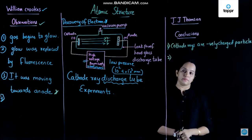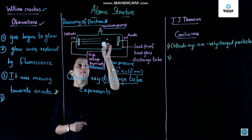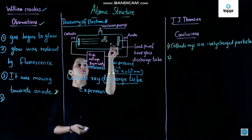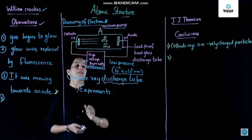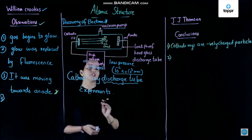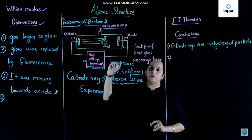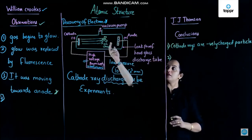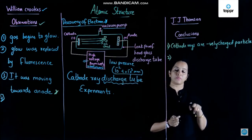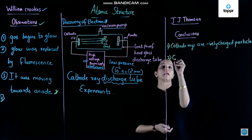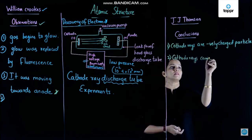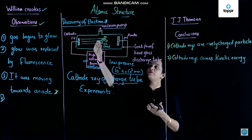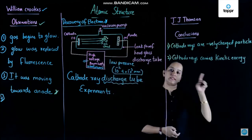They also observed that if in the passage of these rays a light-weight pin wheel is kept, as soon as the rays hit this pin wheel, it sets the pin wheel into mechanical motion. What does this mean? It was concluded that cathode rays carry kinetic energy, and because of this kinetic energy, as soon as they hit the pin wheel, the pin wheel starts rotating.